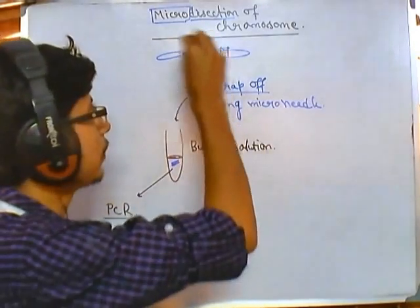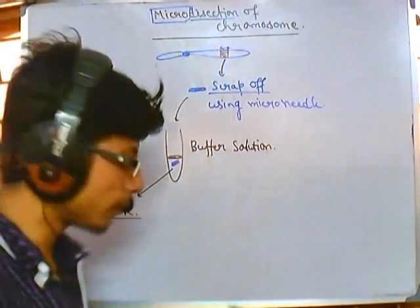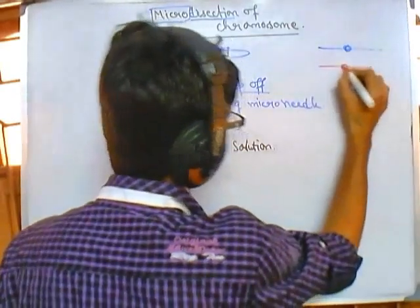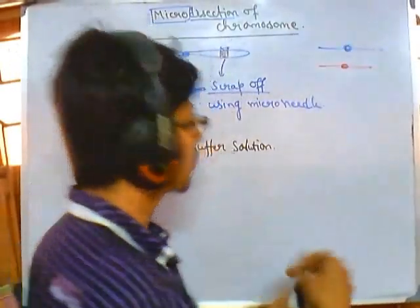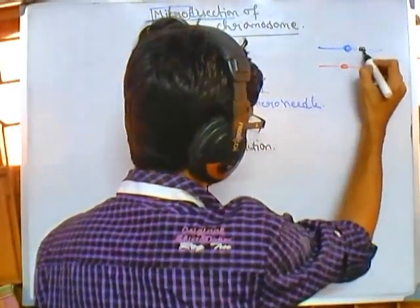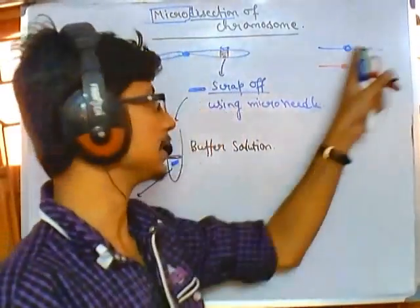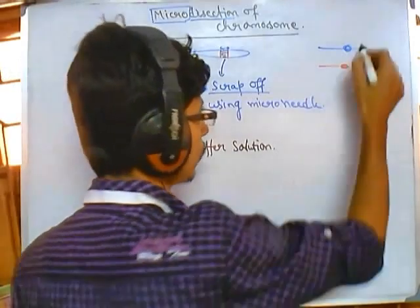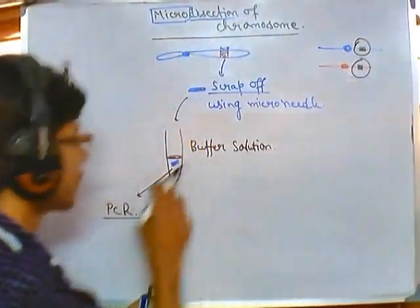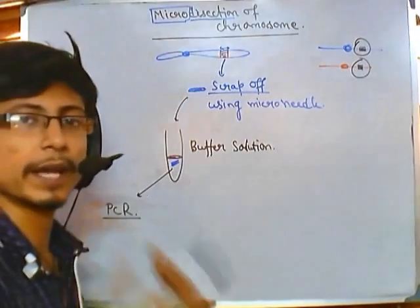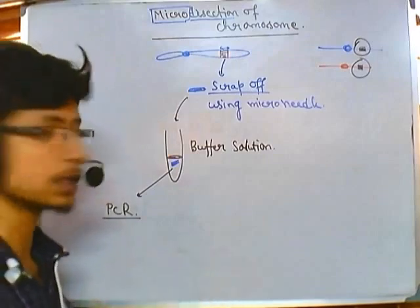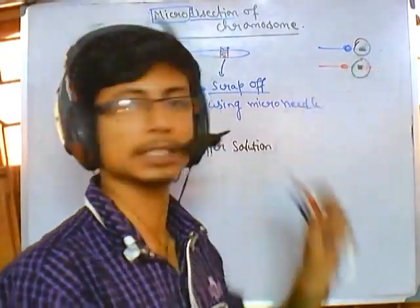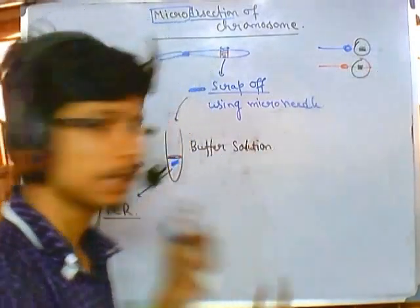We can detect polymorphisms using micro dissection techniques. A polymorphism means the nucleotide stretch for one chromosome is different from another — say, between two human chromosomes from two individuals. If we scrap off the segment from both, amplify it with PCR, then digest the product with restriction enzymes to get restriction-digested fragments, and run a gel, we can detect differences because those nucleotide sequence changes can be visualized on the gel.